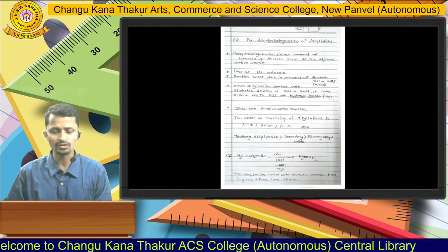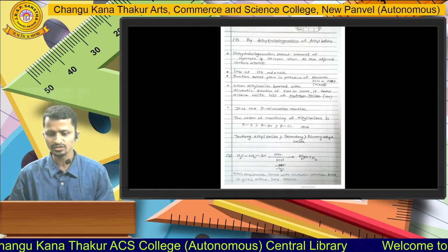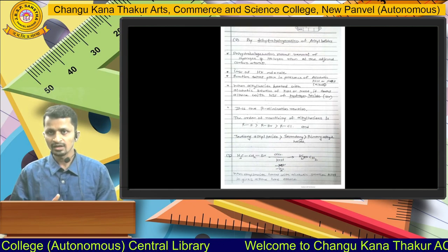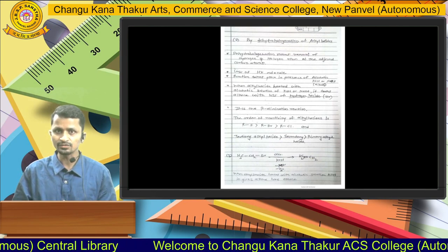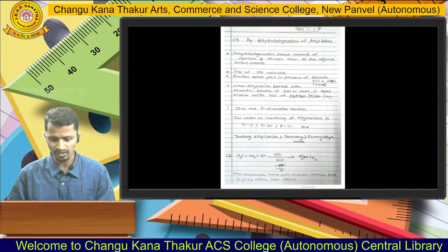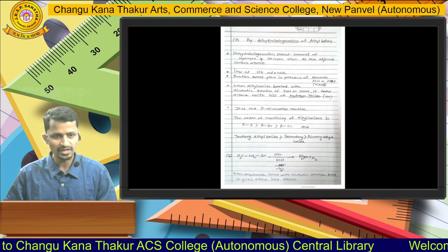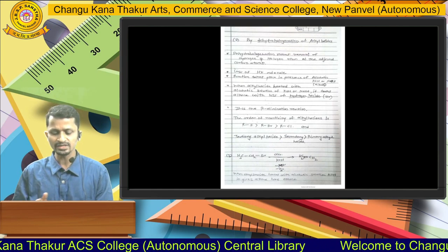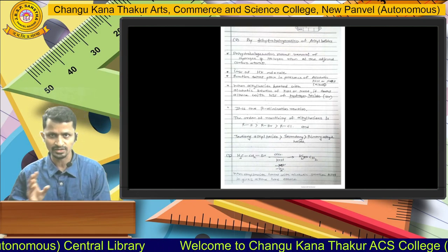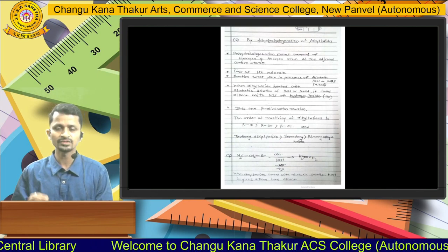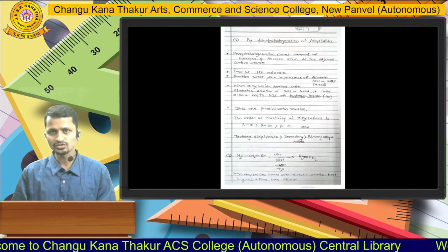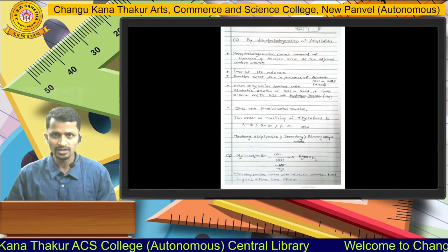The second method to form alkenes is dehydrohalogenation of alkyl halides. Dehydrohalogenation means loss of hydrogen and halogen. You remove hydrogen and halogen from the alkyl halide to get alkene as the product. When you treat an alkyl halide with an alcoholic solution of potassium hydroxide (KOH) or sodium hydroxide (NaOH), loss of hydrogen and halogen takes place and you get alkene as the product.